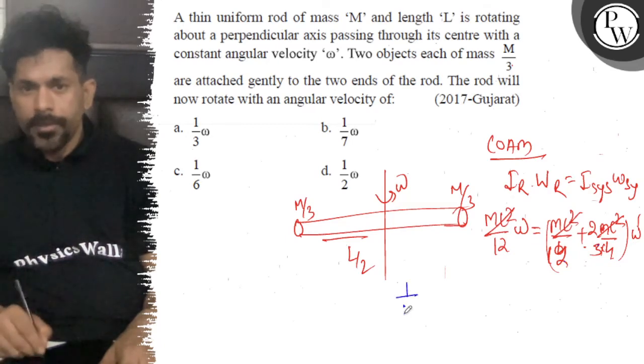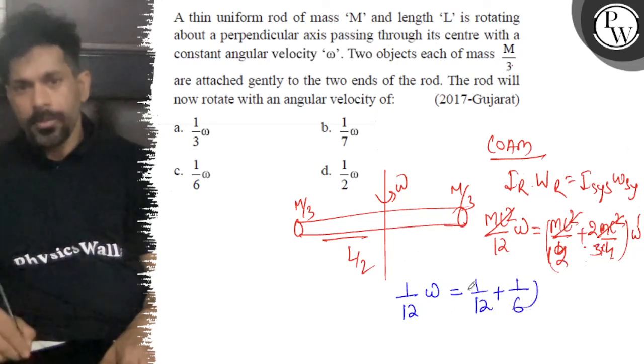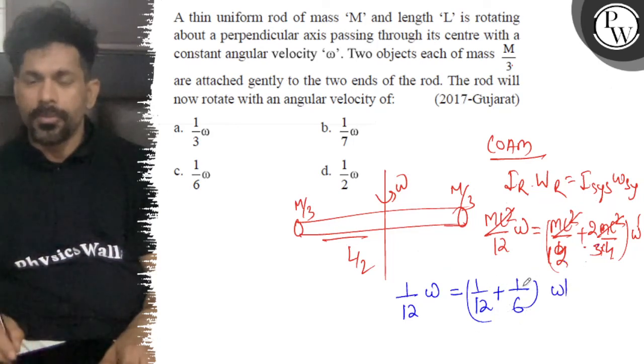So this is 1 by 12 omega is equal to 1 by 12 plus 1 by 6. So omega dash is equal to omega by 3.